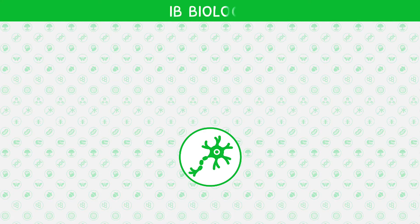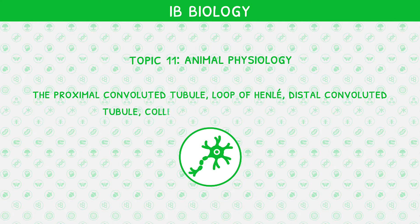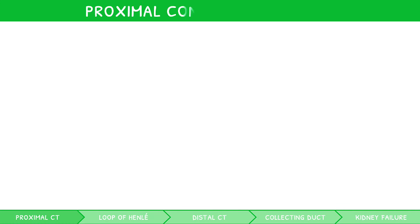Welcome back to our IB Biology video series. This is the fourth video in IB Biology Topic 11, Animal Physiology, where we will be looking at the proximal convoluted tubule, loop of Henle, distal convoluted tubule, collecting duct, and kidney failure. Before watching this video, it is vital that you watch our previous IB Biology Topic 11 video covering the structure of a nephron, as this is a direct continuation. We will revisit each section in detail, starting with the proximal convoluted tubule.